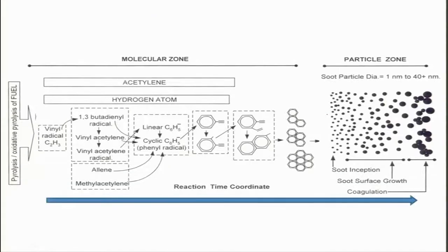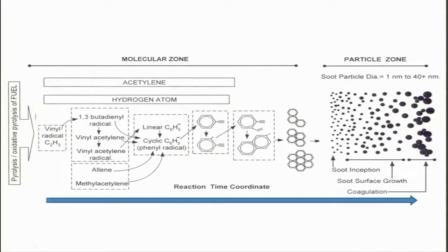It is just a model, but let me show you another model. If you look at this, there is pyrolysis or oxidative pyrolysis of the fuel. In oxidative pyrolysis there might be some oxygen present. Then there will be vinyl radicals which can be converted into 1,3-butadiene radicals.